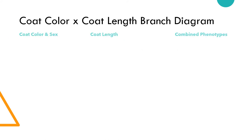However, in order to get our phenotypic ratios, we need to know the probability of having a certain coat color and a certain coat length. For this, we will construct a branch diagram.